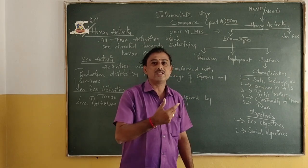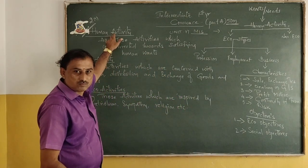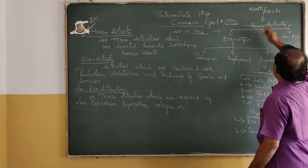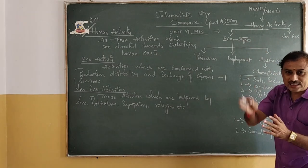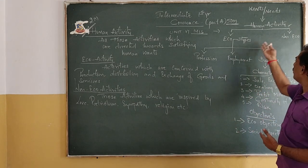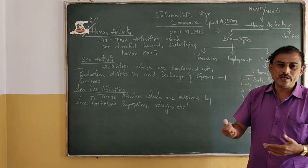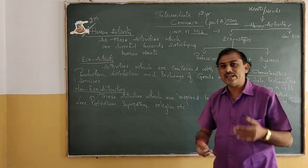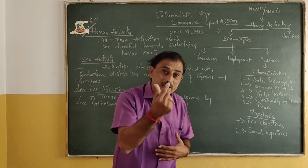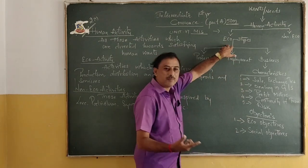We will call those as human activities. The human activities are divided into two parts. To satisfy your wants, desires or needs, you are going to do two things — either you will undertake an economic activity, meaning anything you undertake with an intention or object of earning money.